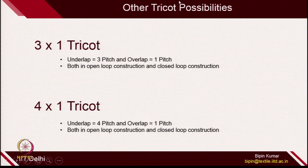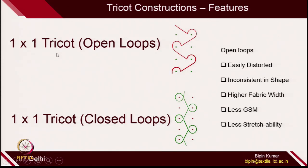Tricot is the widely used warp knitted construction. What are the features of open loops vs. closed loops? In 1×1 open tricot, the loops are very open and can be very easily distorted — so the shape of the fabric is very inconsistent and it will be difficult to observe the open loop construction clearly in the fabric. On a machine making 1×1 tricot, since open loops are in a more open position, you will observe higher width of the fabric — similar to tuck stitch where open tuck legs increase fabric width.